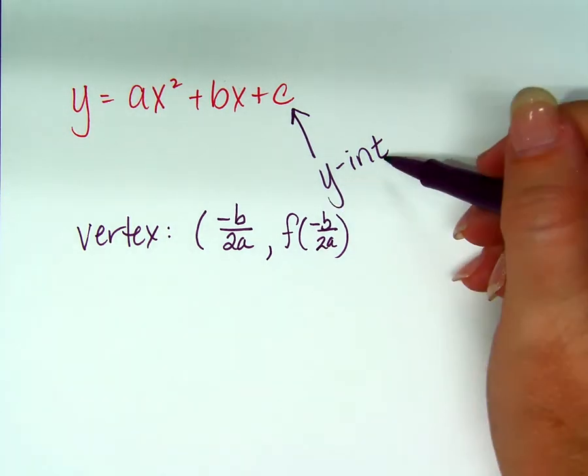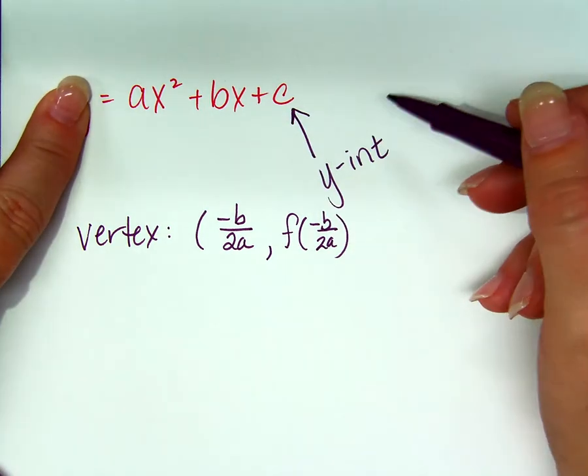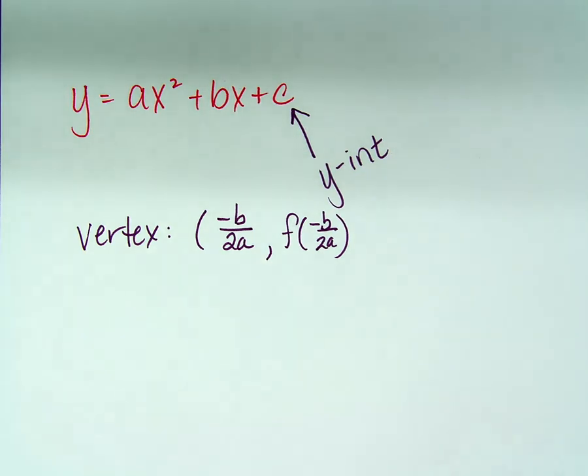Now this is the y-intercept. You could find the x-intercept by letting this equal 0 and solving the function. But typically, if you know the vertex and the y-intercept, you know enough about the fact that it's a symmetric shape that you can find another point in order to make the parabola. Do I need to do that for you or are you okay? You're good?